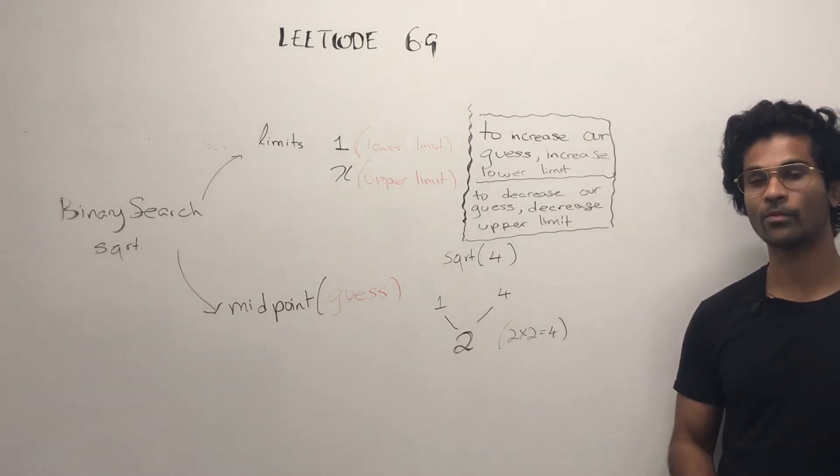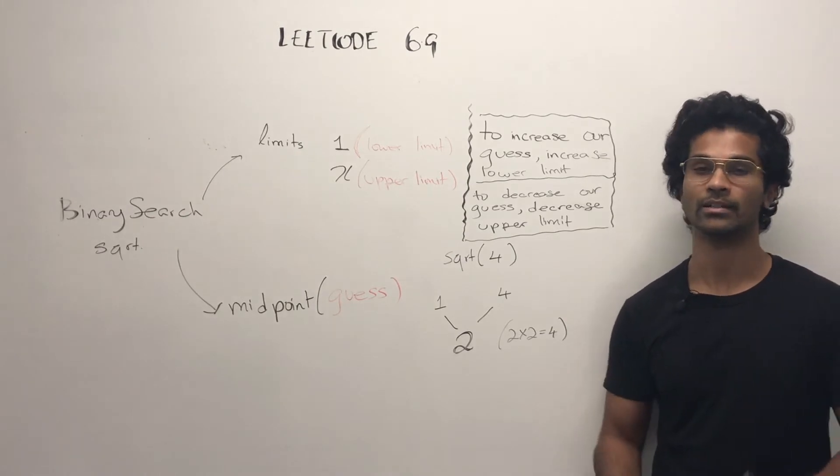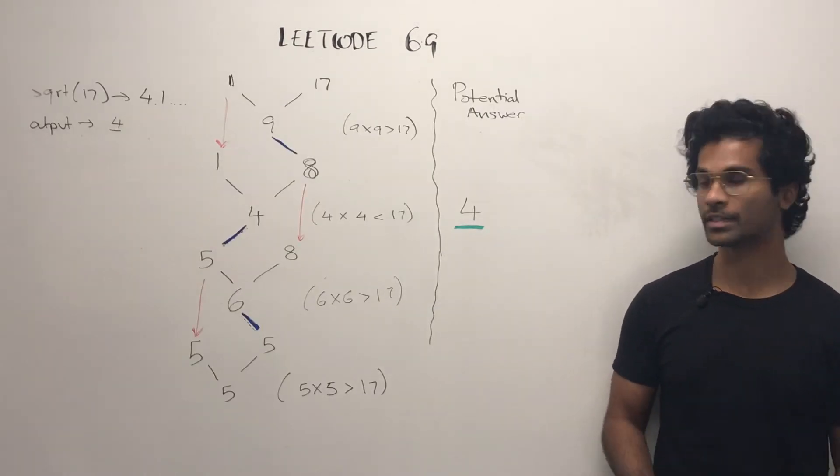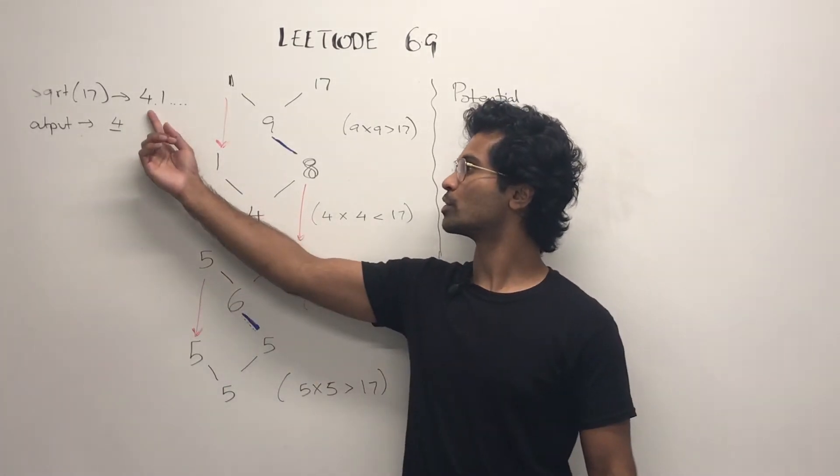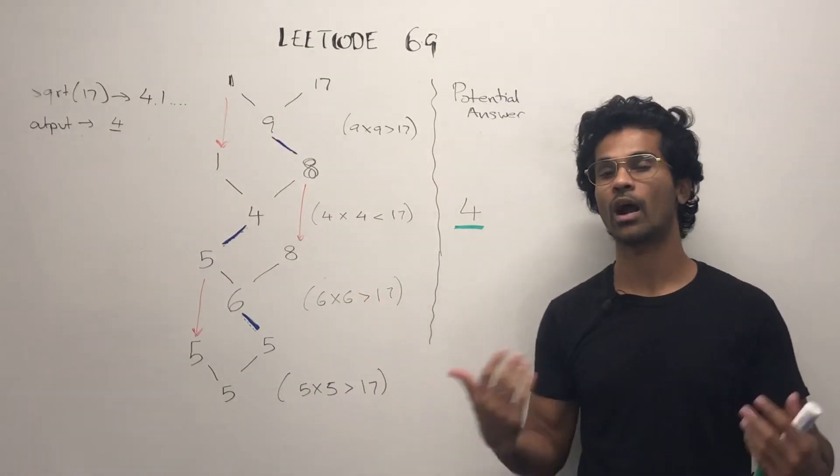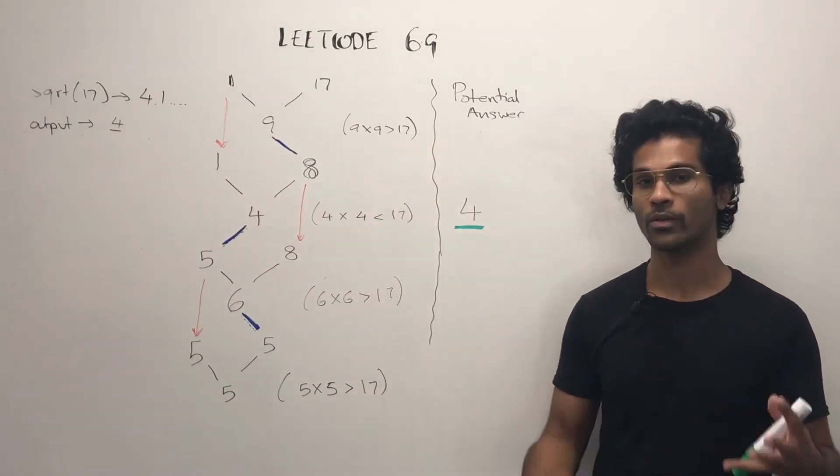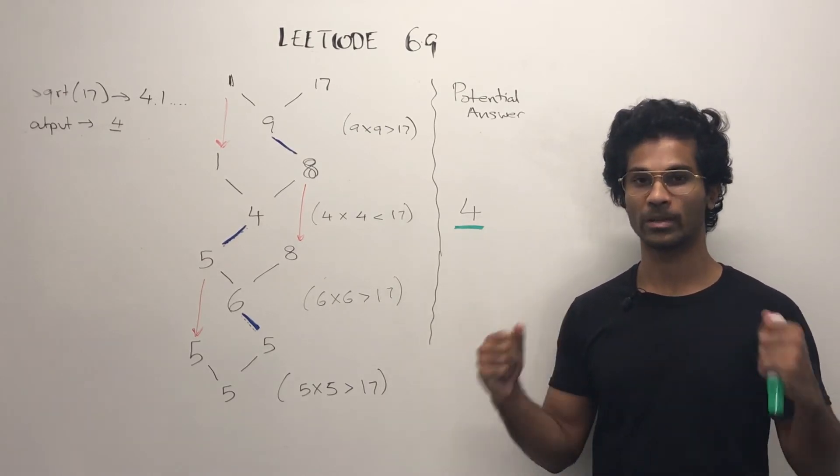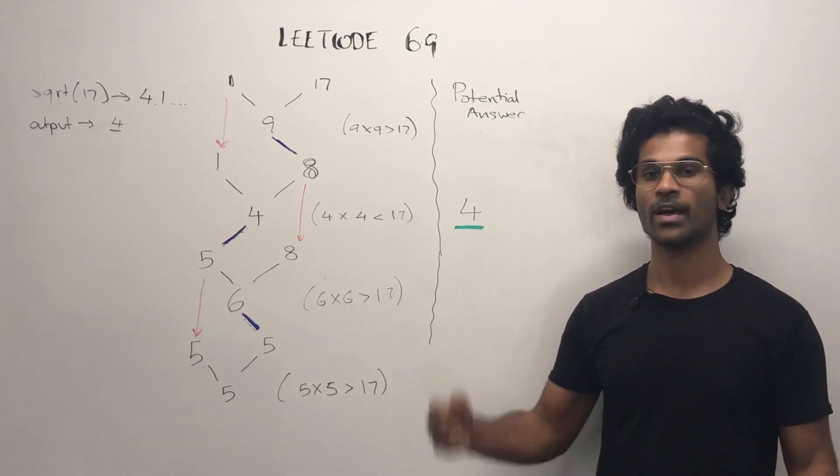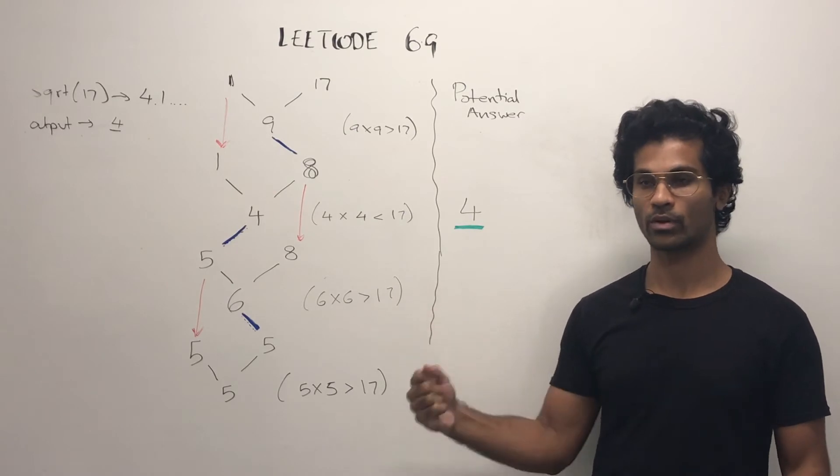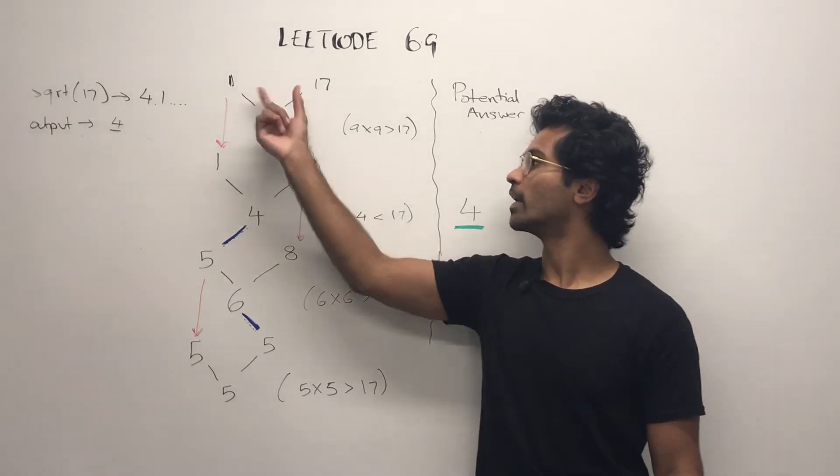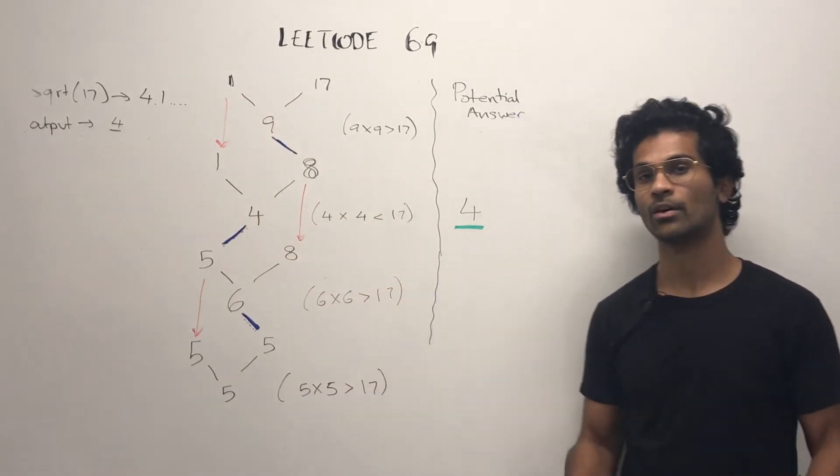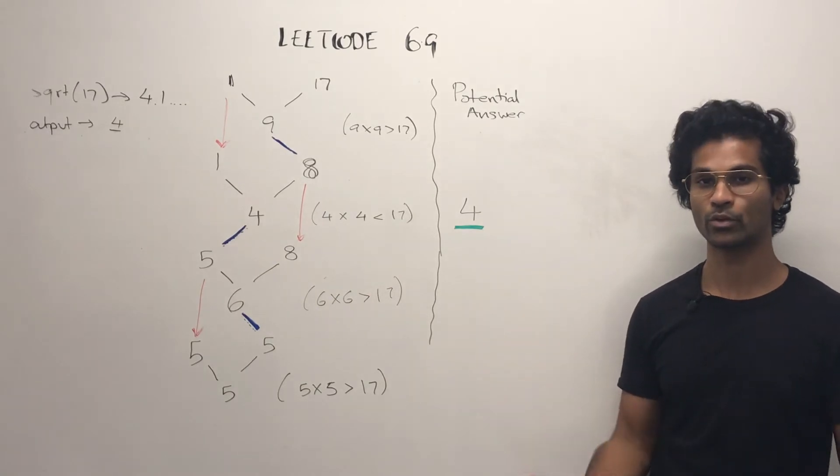Now let's look at a diagram for a number like 17. Let's say we're trying to find the square root of 17. The actual square root is 4.1 something like that, so our output is supposed to be 4. This is how we're going to use binary search. We take our limits, the 1 and 17, and we get the midpoint. So the midpoint, 1 plus 17, 18 by 2 is 9.